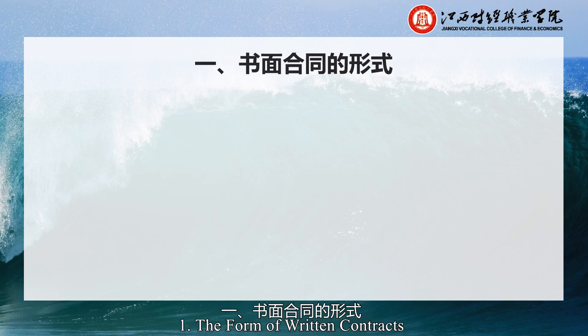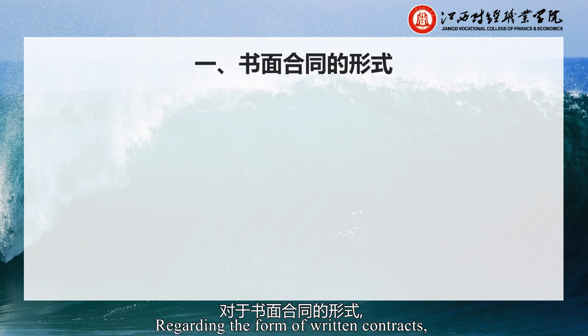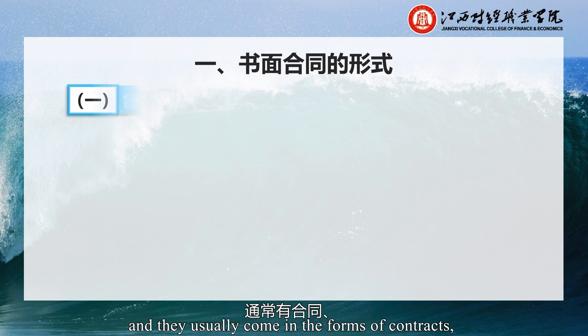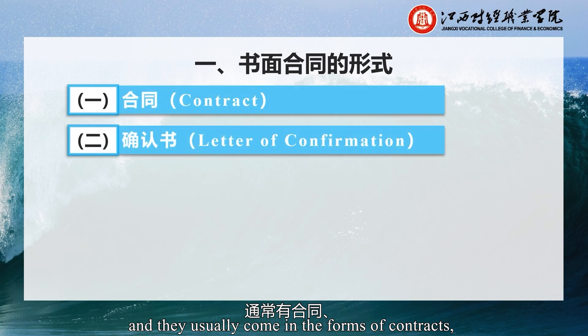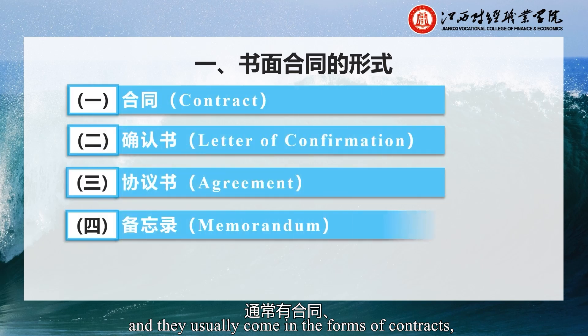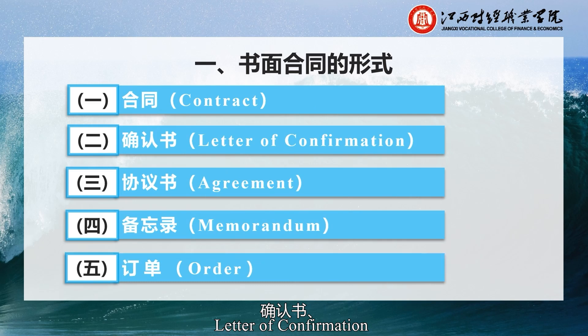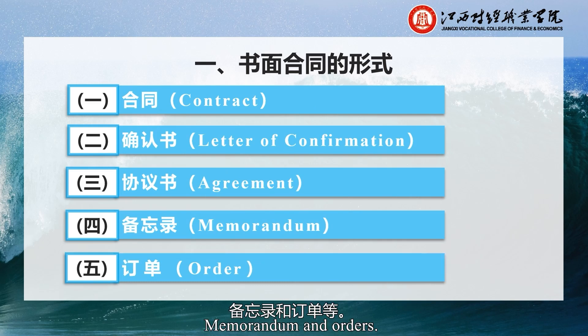The form of written contracts. Regarding the form of written contracts, there are no specific restrictions internationally, and they usually come in the forms of contracts, letter of confirmation, agreements, memorandum, and orders.